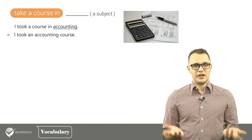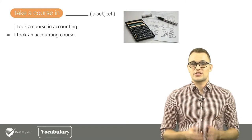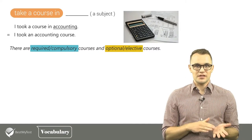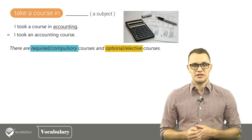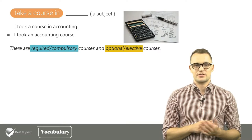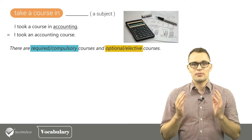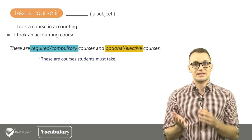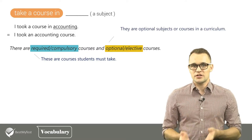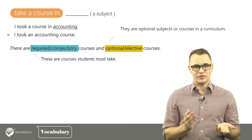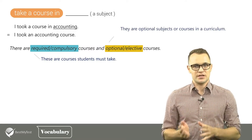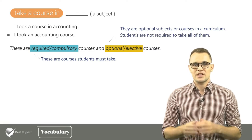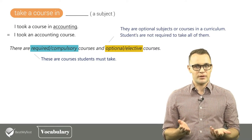In the beginning of every semester students need to select courses. There are compulsory or required courses and optional or elective courses. Compulsory or required courses are courses students must take. Optional or elective courses are optional subjects or courses in a curriculum — students are not required to take all of them.